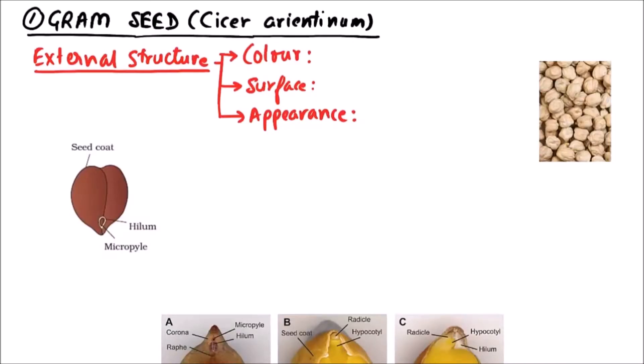Welcome to Studio Biology. In this video we are going to discuss the structure of gram seed, that is Cicer arientinum. It is formed in a small pod or legume. Color is light or dark brown, surface may be smooth or wrinkled.